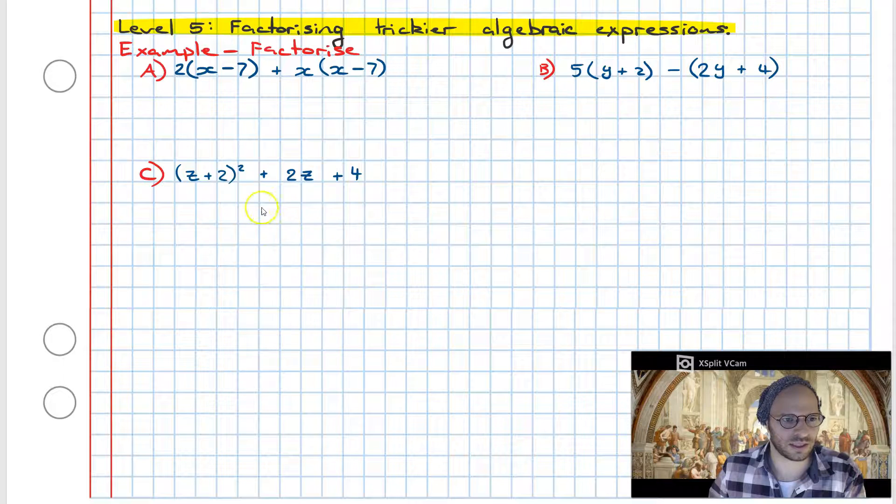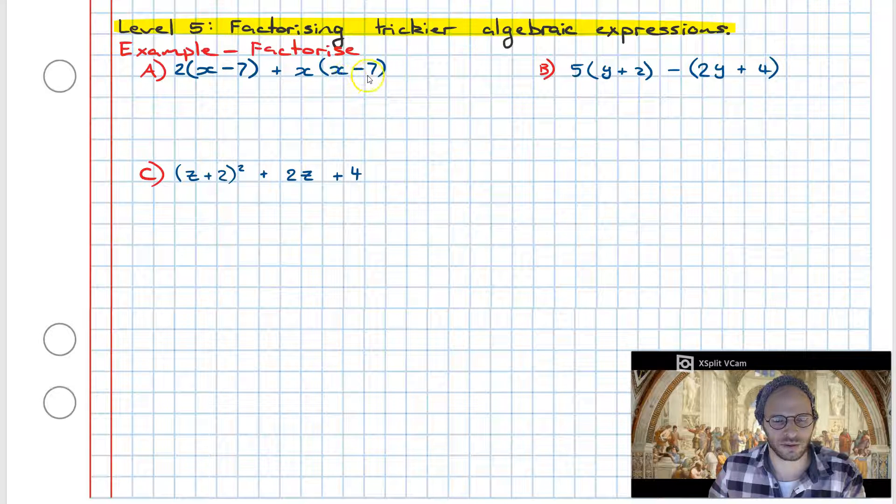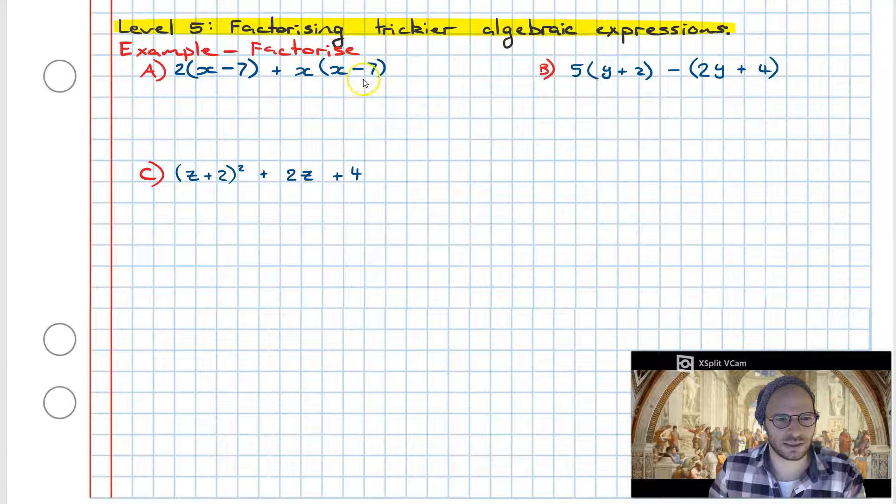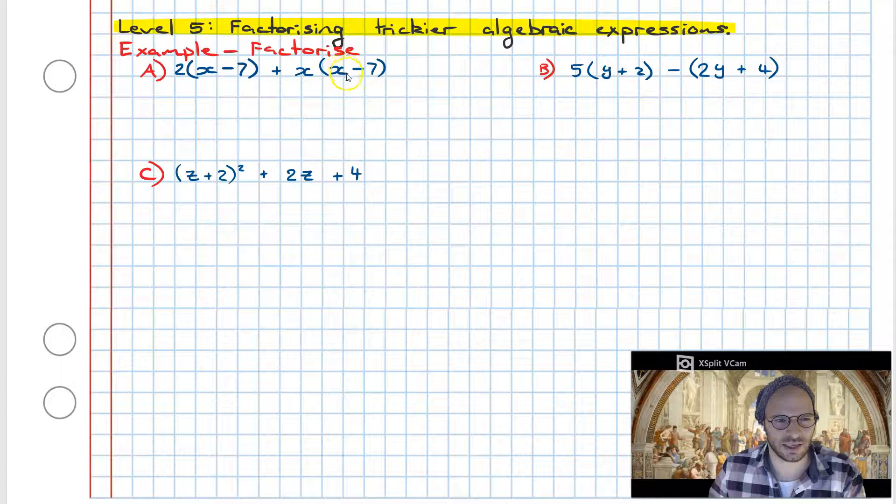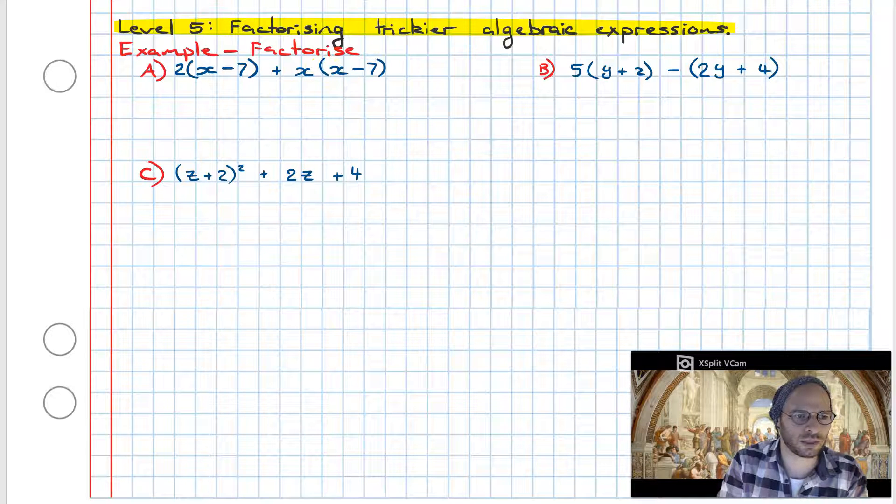Look at example A over here: we have 2 multiplied by x minus 7 plus x multiplied by x minus 7. We have an expression that looks rather tricky compared to what we've been doing in the past. However, what we're going to find is that the distance between us and success in this particular problem is rather short, much shorter than what it has been in the previous questions.